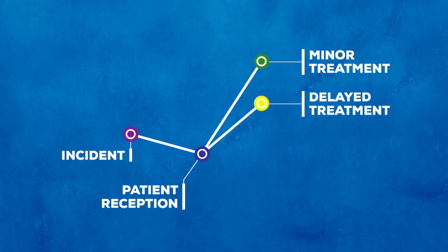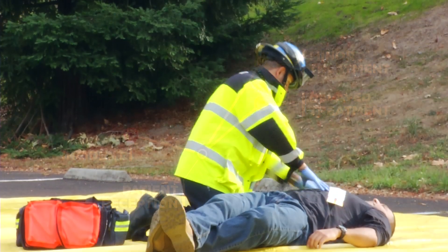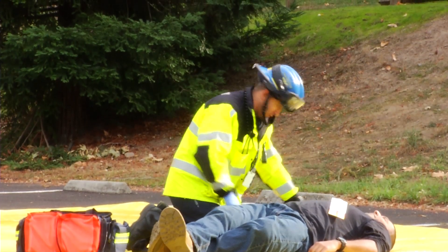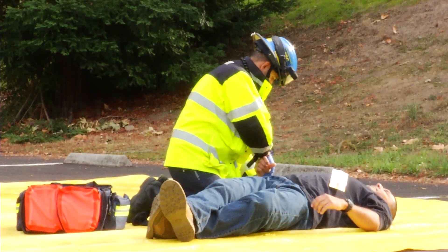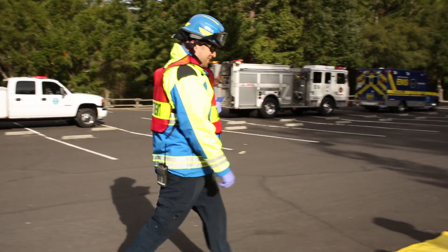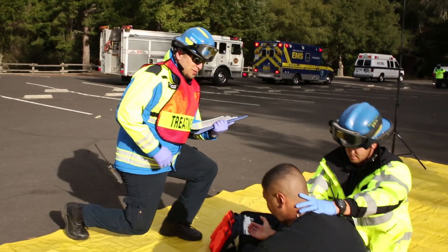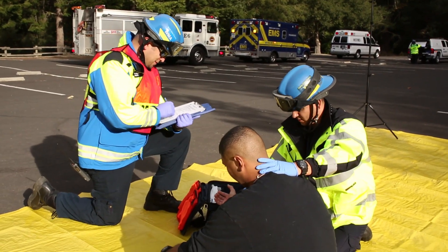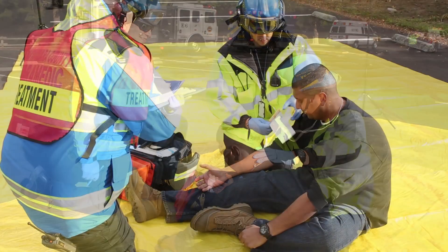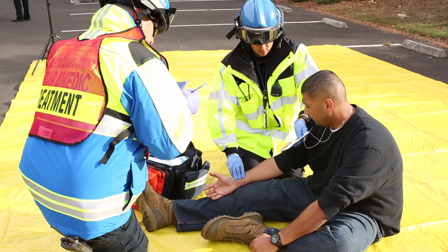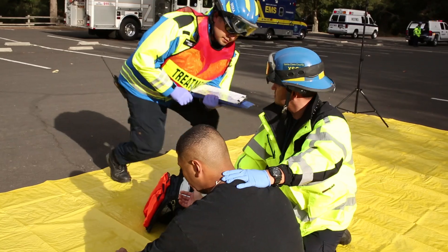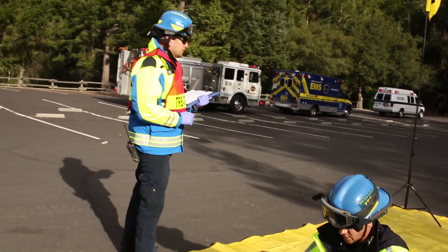The delayed treatment area is also staffed with at least one provider trained at the BLS or ALS level. Following START criteria, patients here should not be able to walk on their own and may require more aggressive BLS or ALS level treatment. The treatment area manager should closely monitor this area for adequate staffing and supplies, and all patients must be repeatedly re-triaged. If a patient's triage category changes, the attending personnel must notify the treatment unit leader.